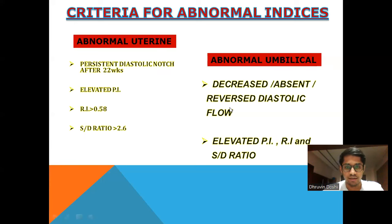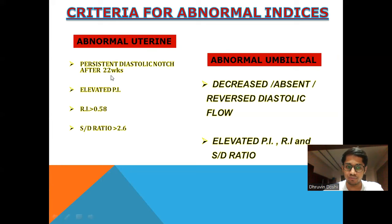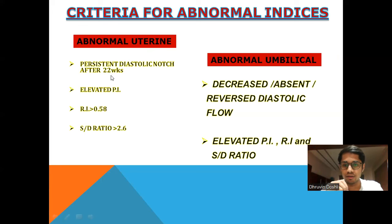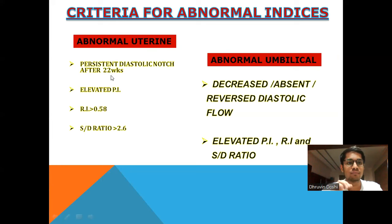The criteria for abnormal indices: abnormal uterine artery shows a persistent diastolic notch after 22 weeks, elevated PI, RI greater than 0.58, and SD ratio greater than 2.6. For abnormal umbilical artery, criteria include decreased, absent, or reversed diastolic flow, and elevated PI, RI, or SD ratio.